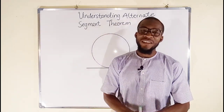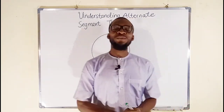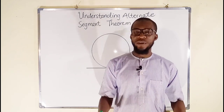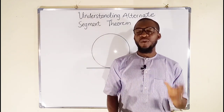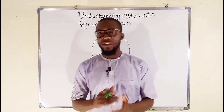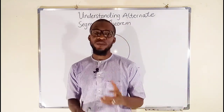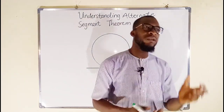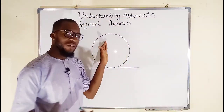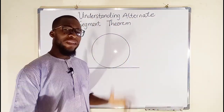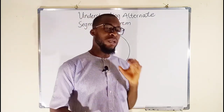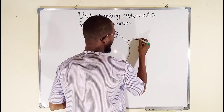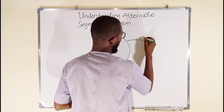Hello, good morning viewers. The title of this tutorial is 'Understanding the Alternate Segment Theorem.' To understand this theorem clearly, let us define some terminologies. First of all, we need a circle. I have already constructed my circle. Any part of a circle is called the circumference, so this is the circumference.